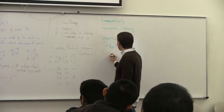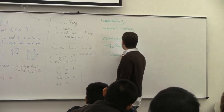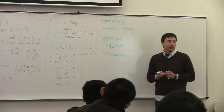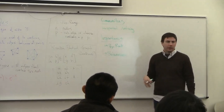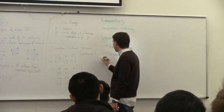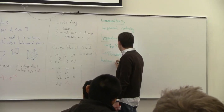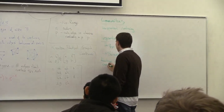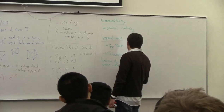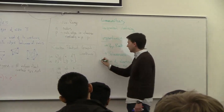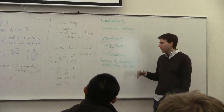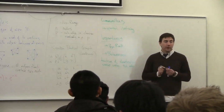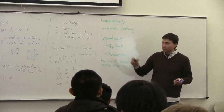Now I'm going to talk about a different view called betweenness. You can calculate the betweenness of an edge — and adjust this for a node as well. It's going to be the fraction of shortest paths that use that edge, looking at all pairs of nodes.